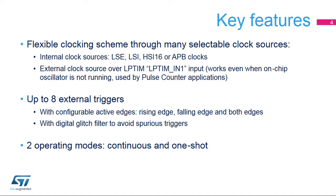The low-power timer has a very flexible clocking scheme. It can be clocked from on-chip clock sources — LSE, LSI, HSI-16, or APB clocks — or from an external clock source over the LP-TIM-N1 input. This latter feature is used for building pulse counter applications and is a key function for metering applications like gas meters. The low-power timer features up to eight external trigger sources with configurable polarity.